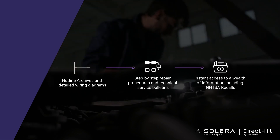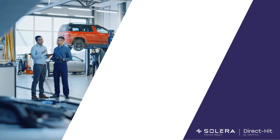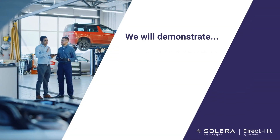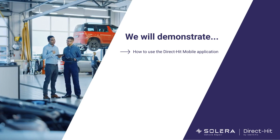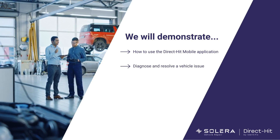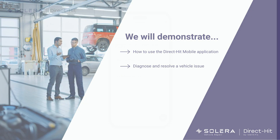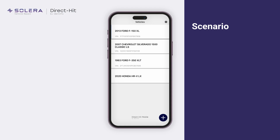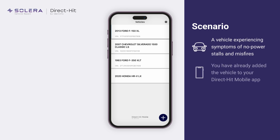In this video we will demonstrate how to use the Direct Hit mobile application to diagnose and resolve a vehicle issue. Let's consider a scenario: you have a customer with a vehicle experiencing symptoms of no power, stalls, and misfires. You have already added the vehicle to your Direct Hit mobile app, and now you need to diagnose the issue.